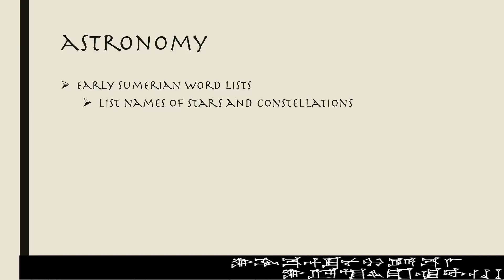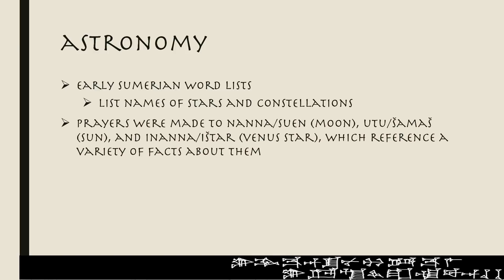Astronomy. There are early Sumerian word lists that contain lists of star names and constellation names, and so we can glean information about their understanding of the heavens based on these word lists. We can look into prayers that were made to various deities including Nanna/Suen, who is the moon god; Utu — Akkadian Shamash — who is the sun god; and then Inanna/Ishtar, the Venus star. In these texts, these prayers reference a variety of facts about these heavenly bodies and deities.